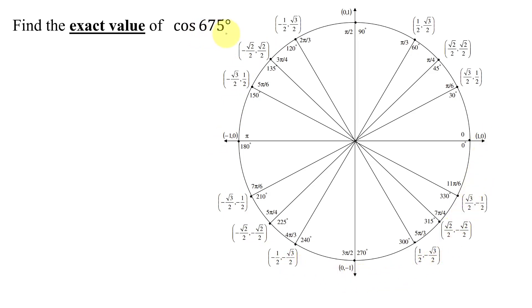Now, is 675 degrees an angle on my unit circle? No, all the angles on the unit circle lie between 0 and 360 degrees. So I'm going to have to use my knowledge of coterminal angles to find an angle that is on the unit circle.